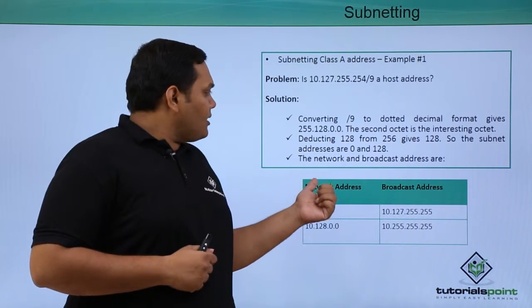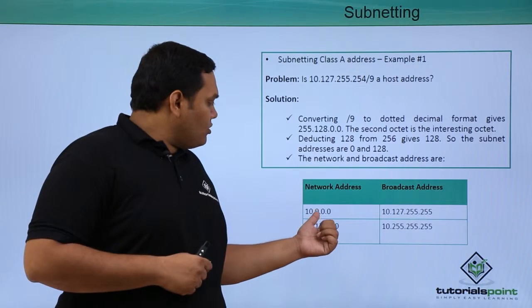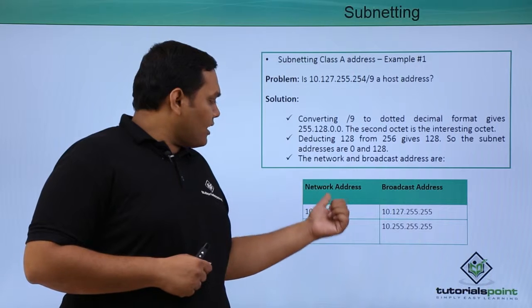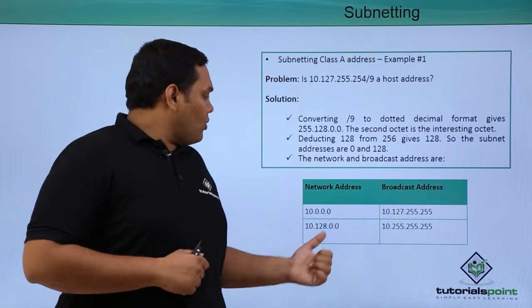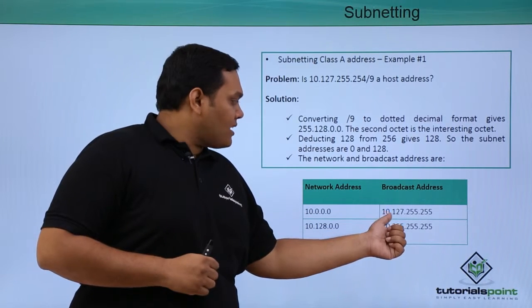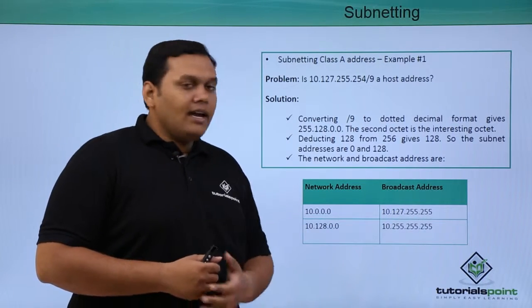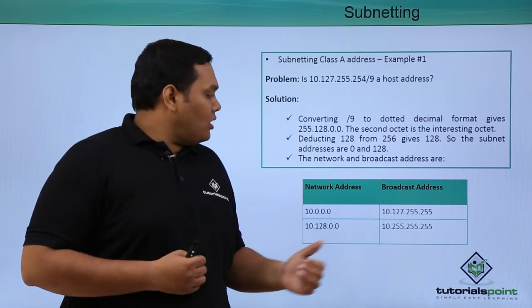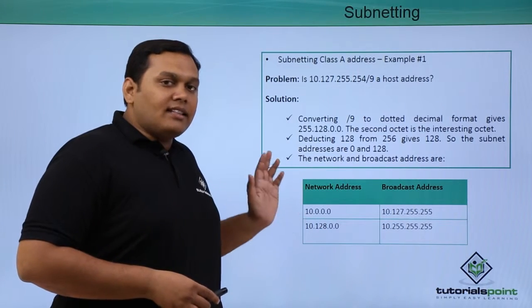You can see clearly the network and broadcast addresses classified here. 10.0.0.0 and 10.128.0.0 are the network addresses, and the broadcast addresses are 10.127.255.255 and 10.255.255.255. These are the broadcast and network addresses.